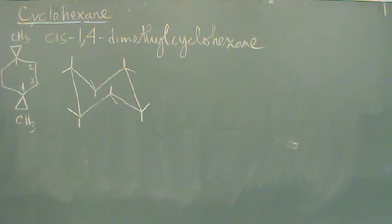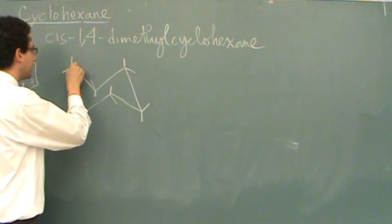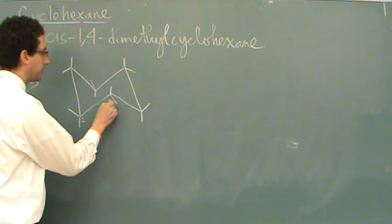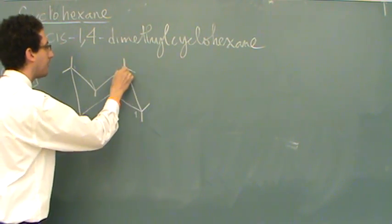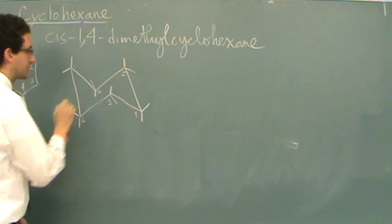Now, you can randomly pick where the 1 position is. That doesn't matter when you're doing this. So let's just randomly pick there. 1, 2, 3, 4, 5, and 6. Okay?